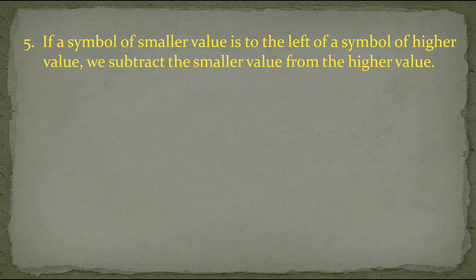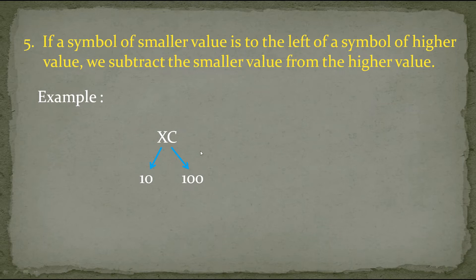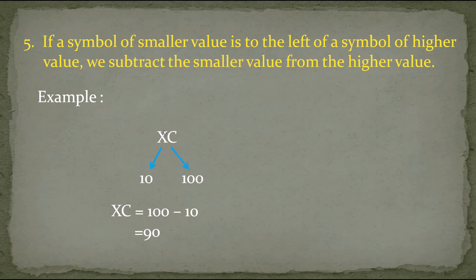In the previous rule, if the smaller value is written to the right of the higher value we add it. Now let's understand this rule by example: XC. We know X is equal to 10 and C is equal to 100. Here X is smaller than C and written to the left of C, so we subtract: XC is equal to 100 minus 10 which equals 90.